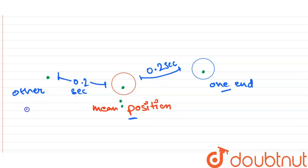So the path will be: one to reach the end, two to reach back to mean position, three to reach the other end, and four to reach back to mean position. It takes 0.2 seconds to travel each of these four distances.